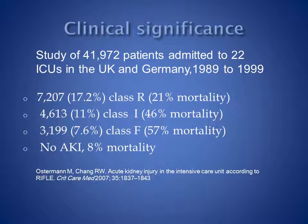Worsening renal function is associated with increasing mortality in the critically ill. In one study of almost 42,000 patients, those in RIFLE class R were found to have a 21% mortality. Patients with class I acute kidney injury had a 46% mortality, and those with class F had a 57% mortality. Patients who had no AKI during their ICU stay had an 8% mortality.